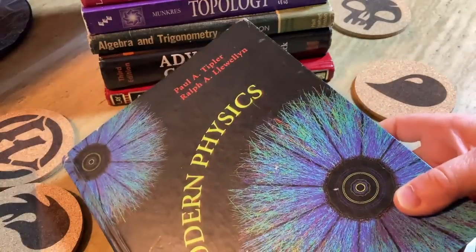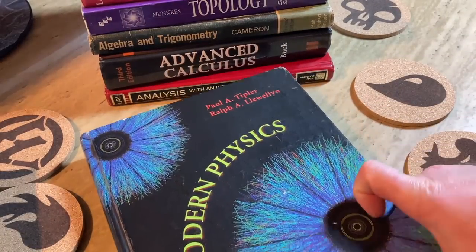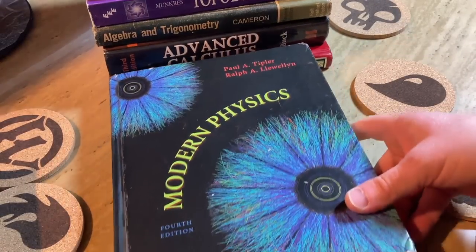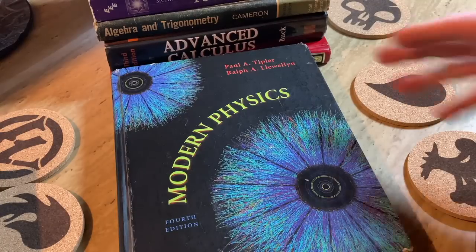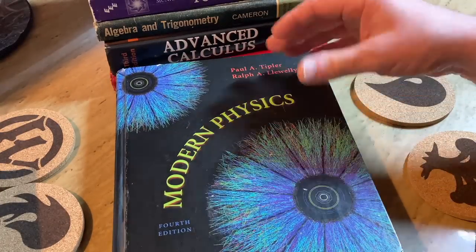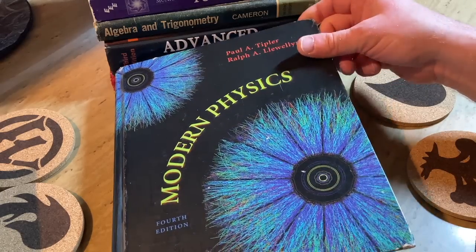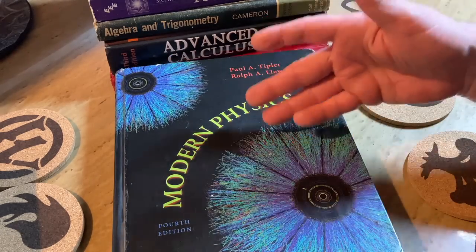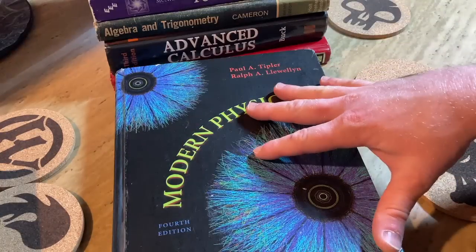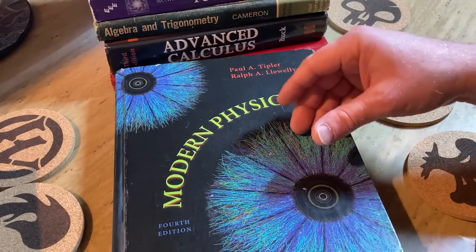This book here is really interesting. I've read very large portions of this book. This is a book on modern physics. So in the United States, a student, an undergraduate student, would take a course on modern physics, typically after taking two courses on physics. So physics one and physics two. And then this would be like physics three. When I used this book for a course, the course was actually called physics three.